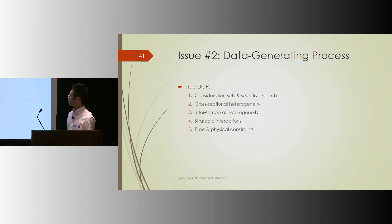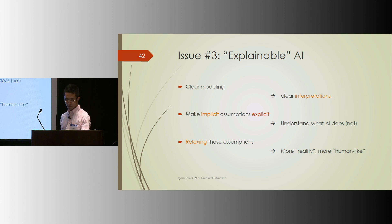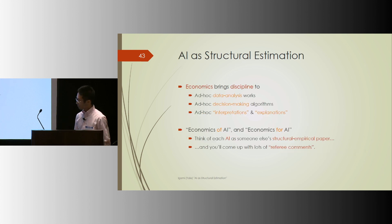And that's not just going to be good for economic research. I think that's going to be also good for developing certain types of AIs. Clear modeling would lead to clear interpretations or explanations, making implicit assumptions explicit would tell us or make us understand what AIs, particular AIs do or do not. And relaxing some of these assumptions with more recent techniques would allow us to capture more reality. And if we want, we can make those AIs more human-like by capturing those more reality.